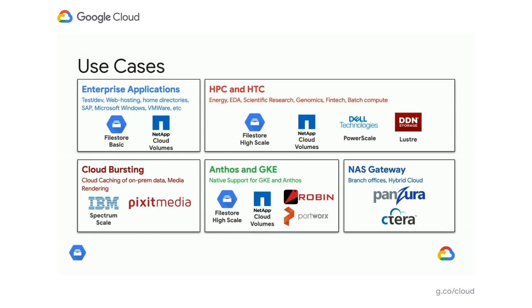We all know that file workloads are incredibly varied. And as a consequence, there is not a single best file storage solution for all use cases. This view you see here is one way to slice and dice it. Sometimes GCP's offering, FileStore, will be the best choice. And sometimes it'll be a partner offering. For these reasons, we're committed to supporting a strong partner ecosystem.